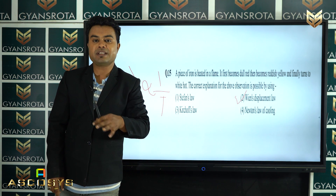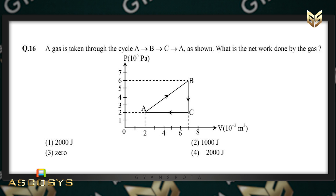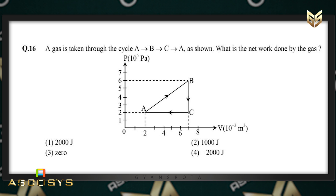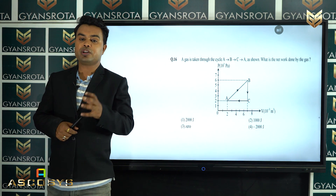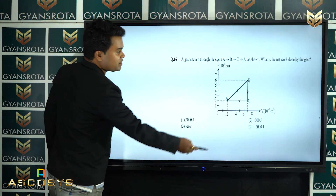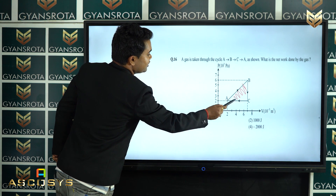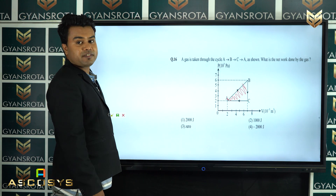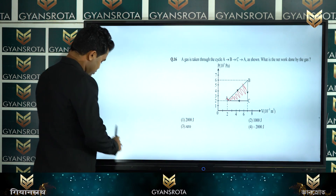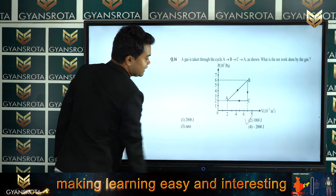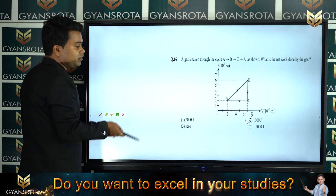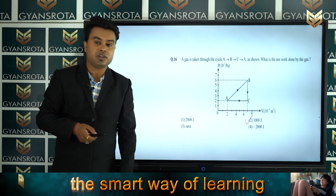Question 16: a gas is taken through the cycle A to B, B to C, and back to A as shown in the figure. The net work done by the gas equals the area under the curve, which is the area of the triangle in the PV diagram. Area of a triangle is half times length times breadth. Calculating this gives 1000 joules, which is option 2 — the correct answer.